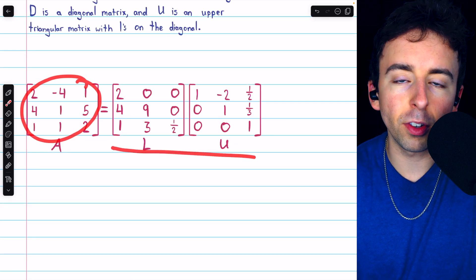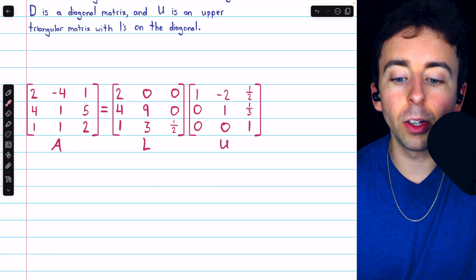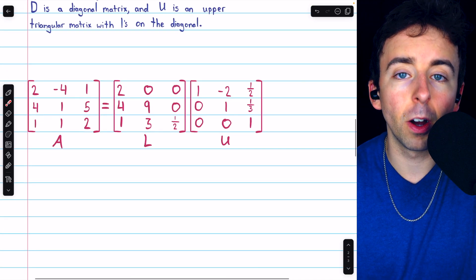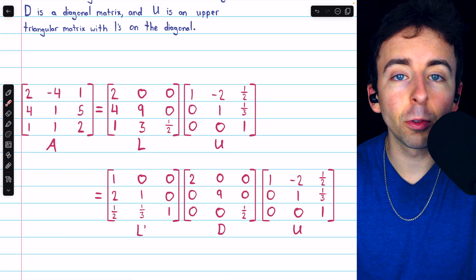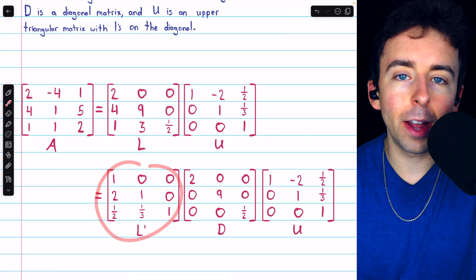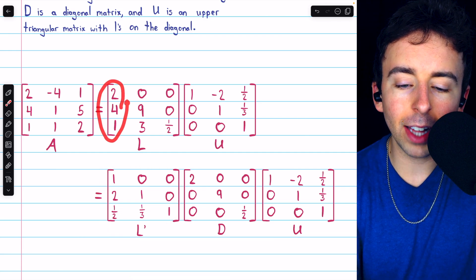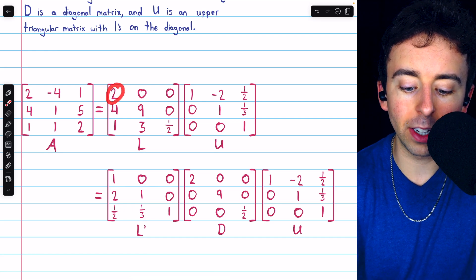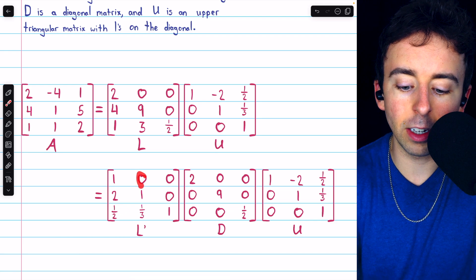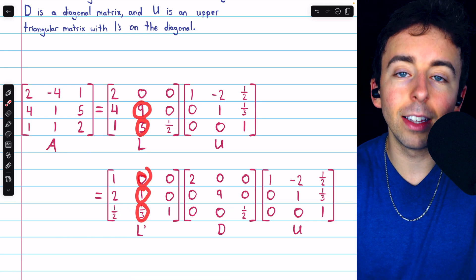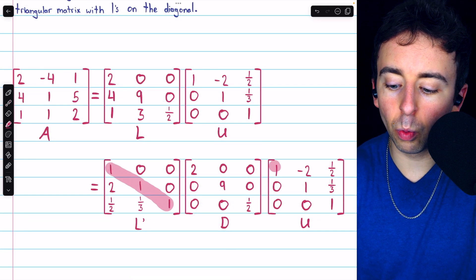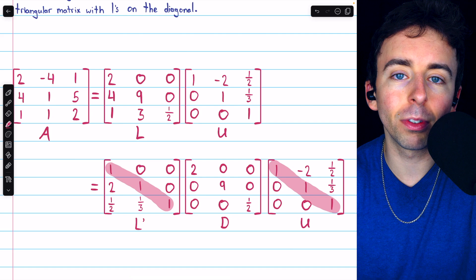Here's a matrix A whose LU decomposition we've previously constructed. To turn this into an LDU decomposition, we follow the formula. The diagonal entries of L are stored in the diagonal matrix D. To find L prime, each column of L is divided by its diagonal entry: 2 divided by 2 is 1, 4 divided by 2 is 2, and 1 divided by 2 is one half. In column 2, 0 divided by 9 is 0, 9 divided by 9 is 1, and 3 divided by 9 is one third. The result is an L prime DU factorization with ones on the diagonals of both triangular matrices.